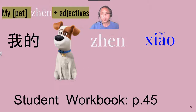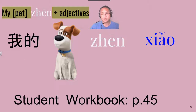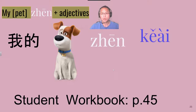我的狗真小 (wǒde gǒu zhēn xiǎo). Don't forget to repeat after me — 跟我念 (gēn wǒ niàn). 我的狗真小. So you could put any other item here with the degree word and the description that fits. Next one: 我的狗 (wǒde gǒu) 真可爱 (zhēn kě'ài). 我的狗真可爱 — My dog is really cute.